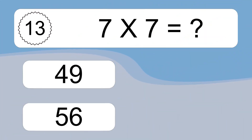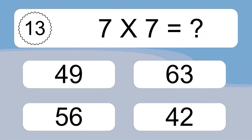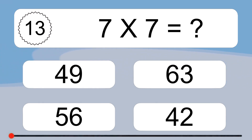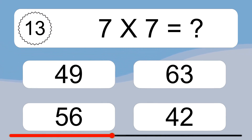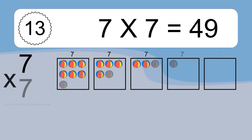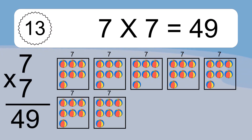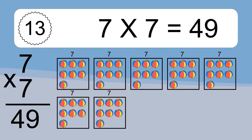7 times 7 equals what? 7 times 7 equals 49. We have 7 boxes and each box has 7 colorful balls inside. If you count all the balls in all the boxes together, you will have 7 times 7 balls. This equals 49 balls.